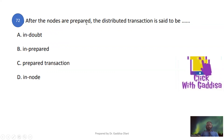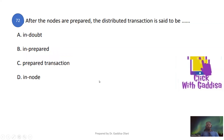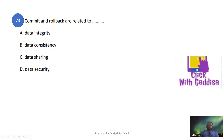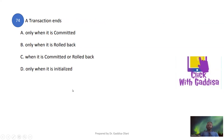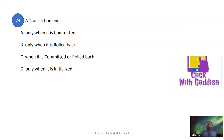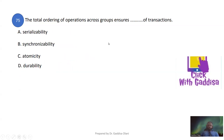After all nodes are prepared, the distributed transaction is said to be in a prepared state, a committed state, or a rollback state. Commit and rollback operations are related to data sharing in distributed transactions.